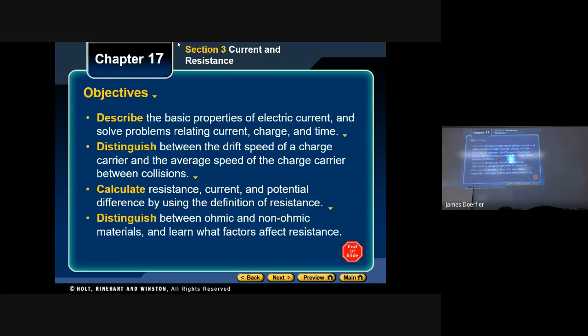In this section we are going to describe the basic properties of electric current and solve problems relating current, charge, and time. Distinguish between drift speed, which we're not going to worry about. Calculate resistance, current, and potential difference by using the definition of resistance. That'll be what we do tomorrow. Distinguish between ohmic and non-ohmic materials and learn what factors affect resistance. Again, that is tomorrow. So we are focusing really today on that first bullet point.